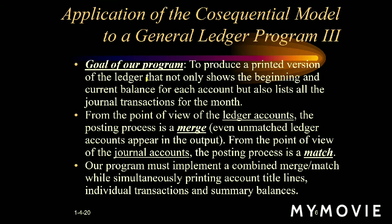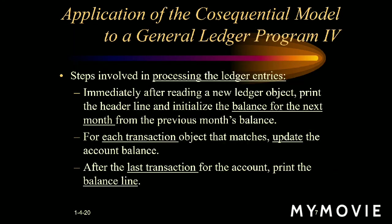Next we are going to see the goal of our program. The goal is to maintain a constant relationship between both the journal file and the ledger file using the account number. For the ledger program we use a merge operation, and for the journal account we use a match operation, for maintaining both files. So this is a combination of both merge and match operations, which you have already seen in the previous topic.